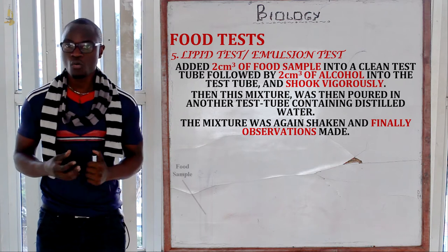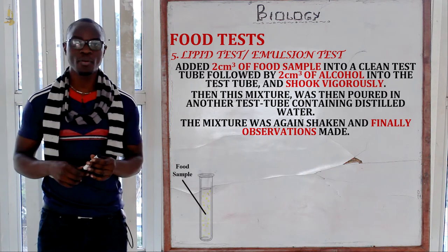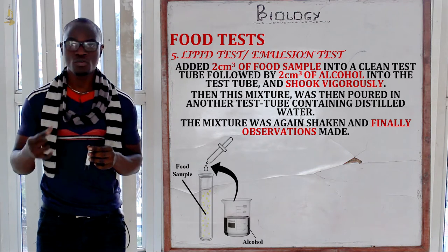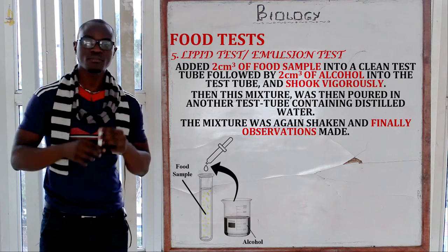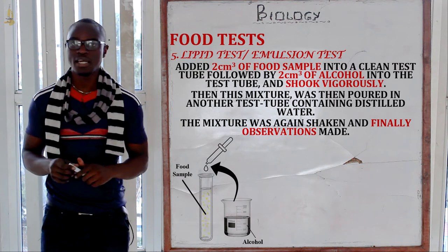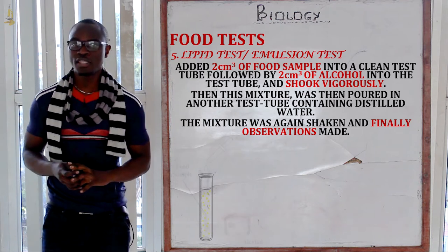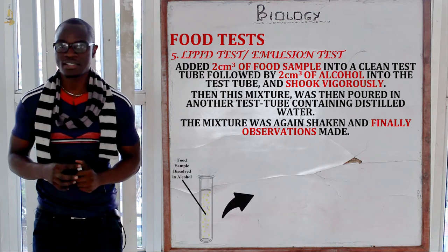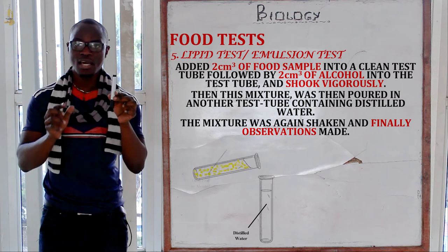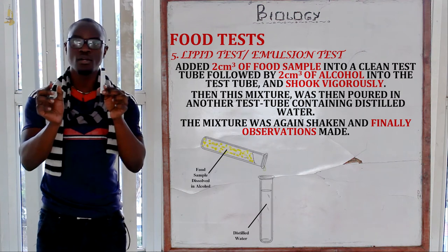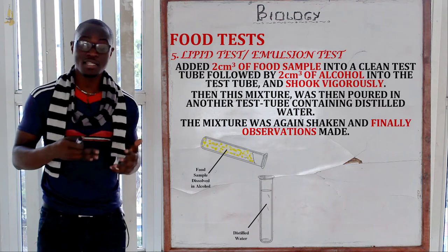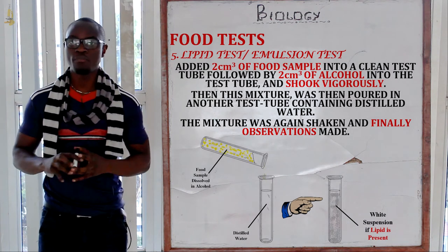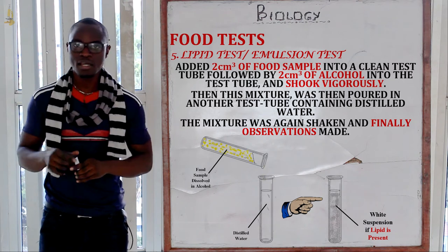The next test we are going to look at is the lipid emulsion test. We take a food sample — for example, milk — about two centimetres cubed, and place it in a test tube. Then we add about two to three centimetres cubed of ethanol and mix it in the test tube containing the milk. We shake the test tube vigorously, then slowly pour the mixture into another test tube containing distilled water. If lipid is present, a white milky suspension will be formed.